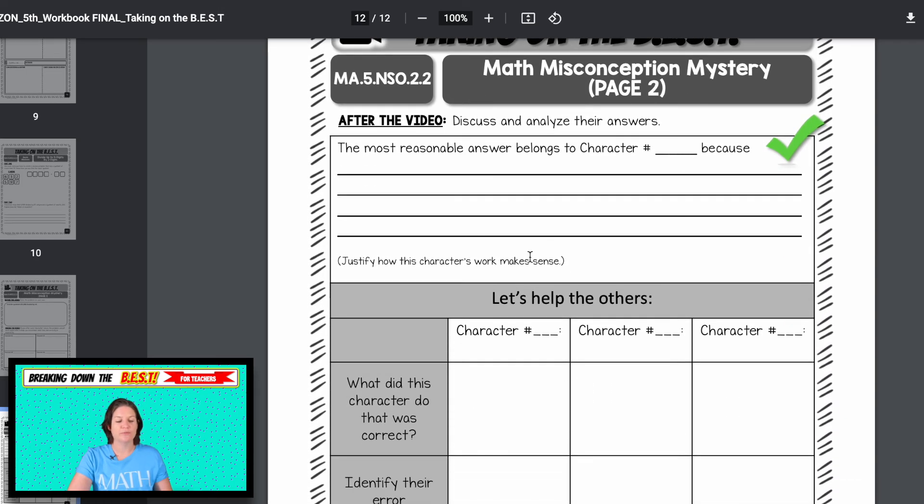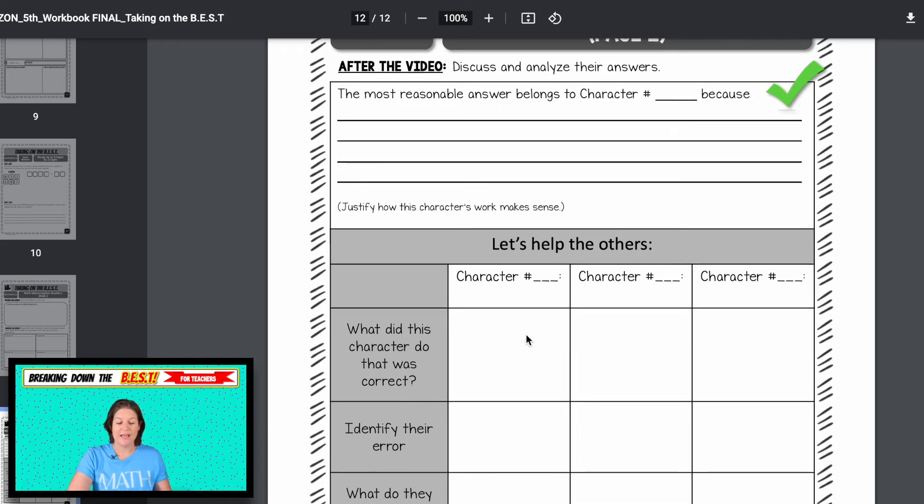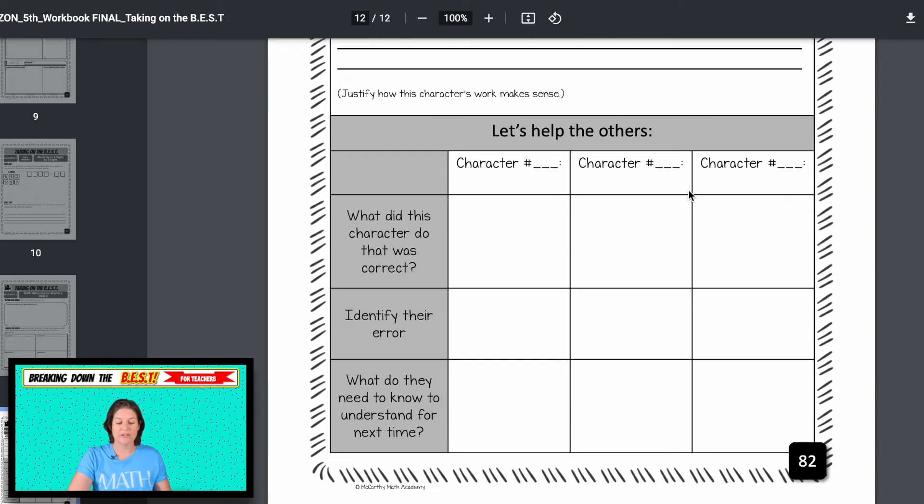Three of those characters will make a mistake that students commonly make, and only one of them has the most reasonable answer. So after the video, after watching all the characters, your students will then file their detective reports, which is this page, page two, they'll explain who the most reasonable answer belongs to, and why. And then with the other ones, the other characters, what did they do that was correct? What was their error? And what do they need to know for next time? So those are super fun.